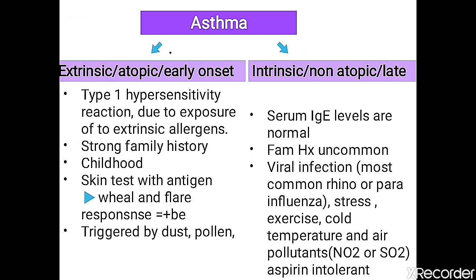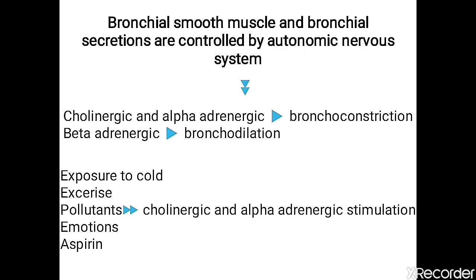In intrinsic or non-atopic asthma, serum IgE levels are normal and it is not related to type 1 hypersensitivity. Normally, bronchial smooth muscle and mucus secretion are controlled by the autonomic nervous system — either sympathetic or parasympathetic. Parasympathetic is controlled by cholinergic fibers, and sympathetic by adrenergic fibers. Cholinergic receptors are muscarinic and nicotinic, and adrenergic receptors are alpha and beta.